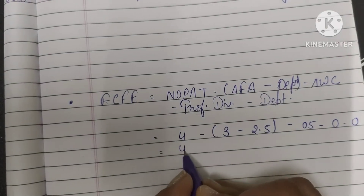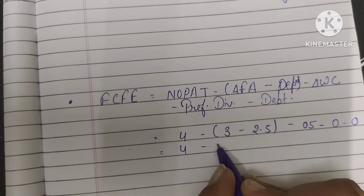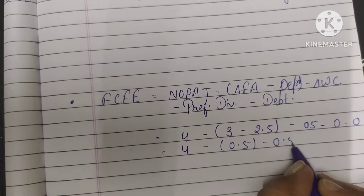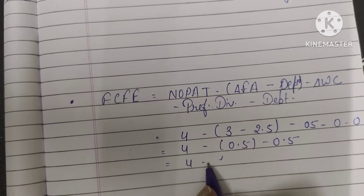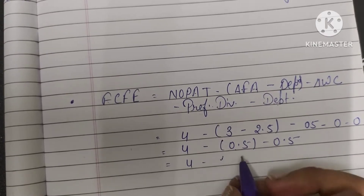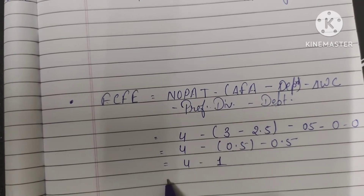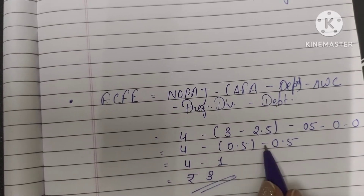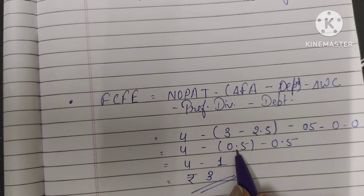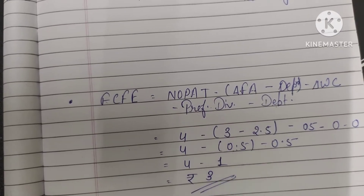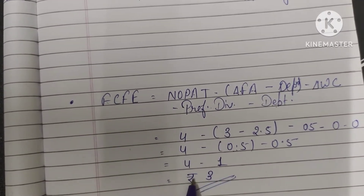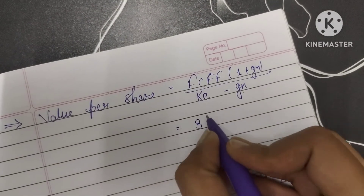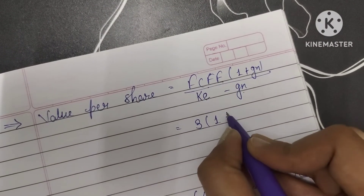Calculating FCFE: 4 minus (3 minus 2.5) minus 0.5. That gives 4 minus 0.5 minus 0.5, which equals 4 minus 1, giving us FCFE = ₹3. So the Free Cash Flow of Equity is 3.